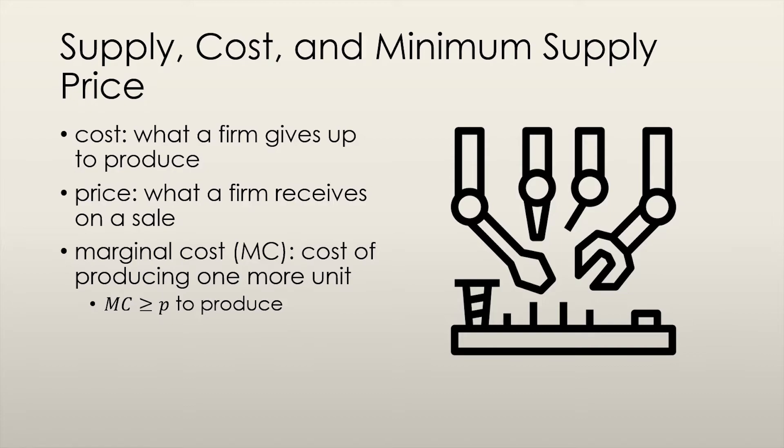Let's move on to the supply side of things. Firms make a profit when they receive more from the sale of a good than its production cost. The cost is essentially what a firm gives up to produce, or how much money they have to spend to produce. The price is what the firm receives when it sells that good. The marginal cost is the cost of producing one more unit of a good.